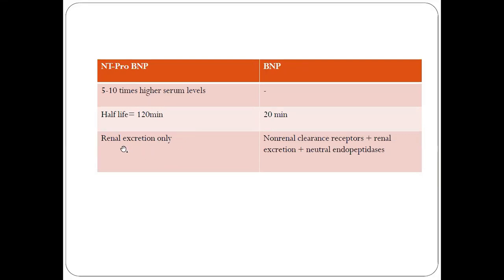If a patient has chronic kidney disease or renal failure, renal excretion is impaired, so NT-proBNP levels will be falsely elevated and unreliable in this group. Therefore, in patients with kidney disease, you should use BNP — not NT-proBNP — as a marker for heart failure.